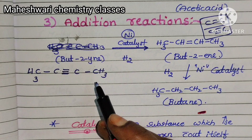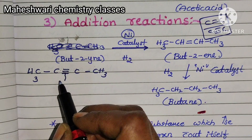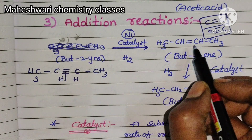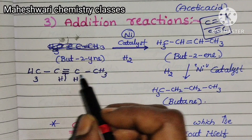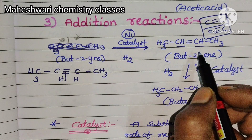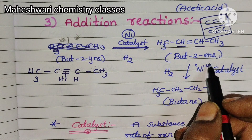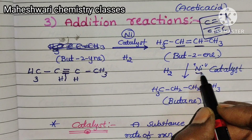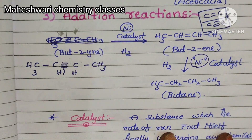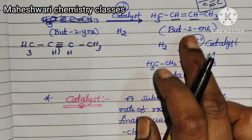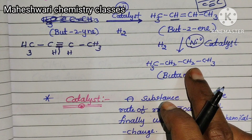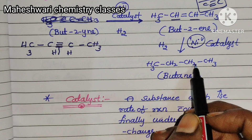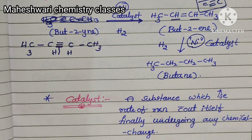Using a nickel catalyst for hydrogenation: but-2-yne (four carbons, triple bond at position 2) undergoes hydrogenation. One of the pi bonds is involved — the triple bond converts to a double bond, and two hydrogens are added, giving but-2-ene. But-2-ene again undergoes hydrogenation with a nickel catalyst; the double bond converts to a single bond, and two more hydrogens are added, giving butane (CH₃CH₂CH₂CH₃) — all single bonds.